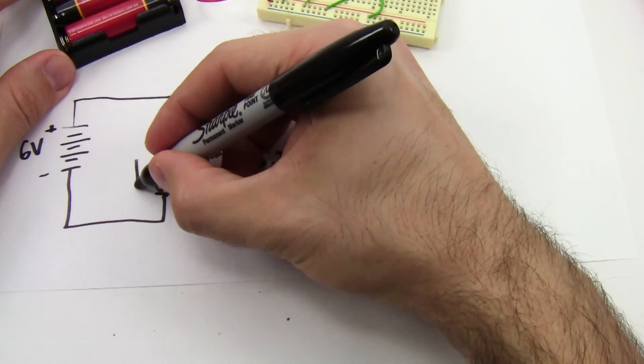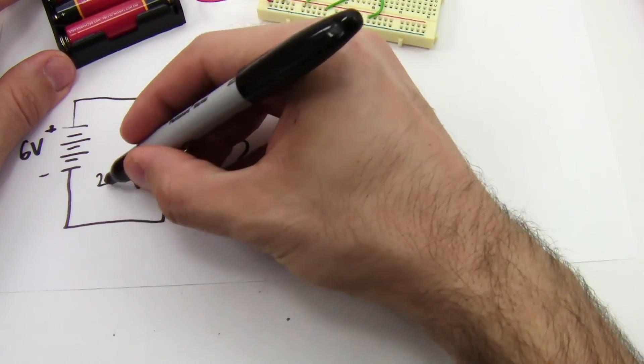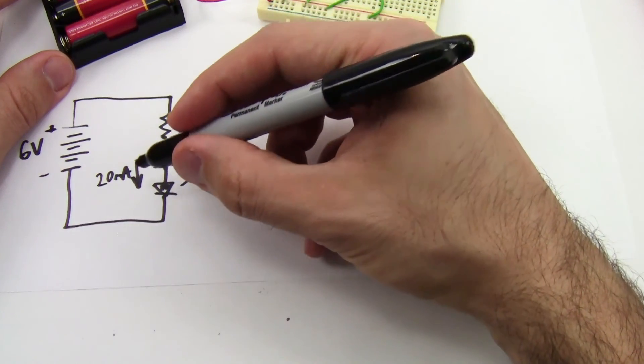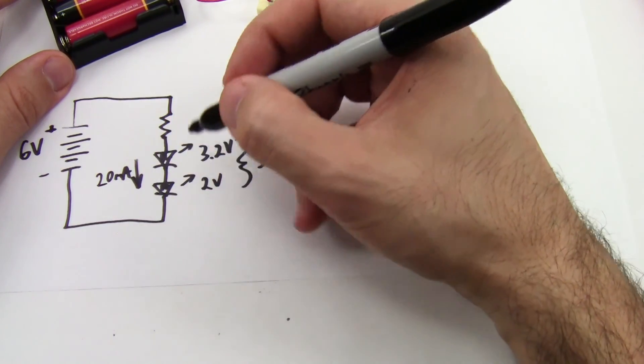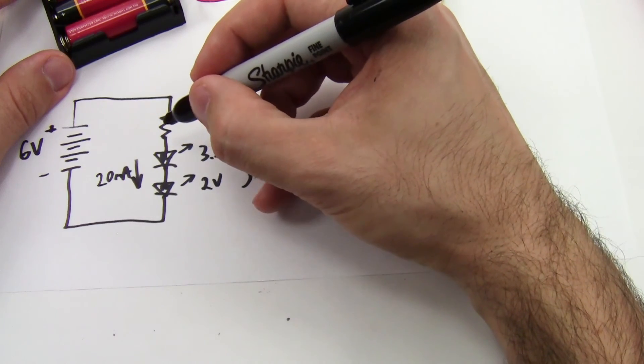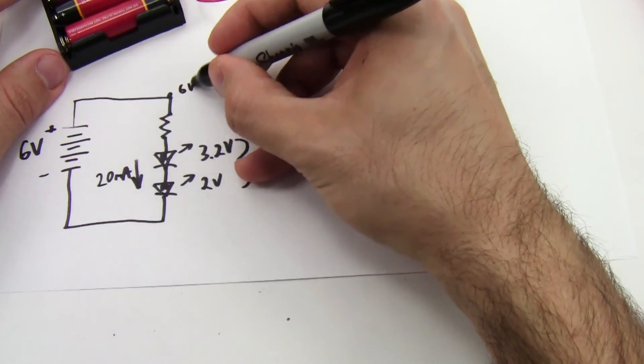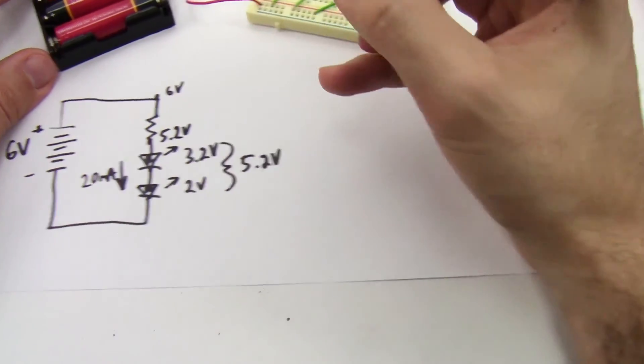Now, I still want 20 milliamps through both of the LEDs. They're in series, so they share the same current. Be careful not to accidentally double the current to 40 milliamps. This is still only 20 milliamps. I do the same calculation I had before, where I know the voltage drop across this resistor. It's 6 volts on this side. It's 5.2 volts on this side.